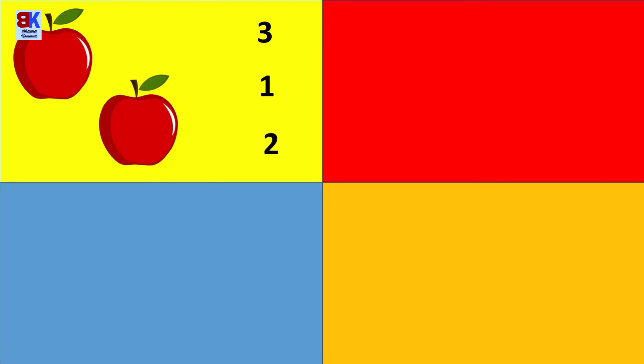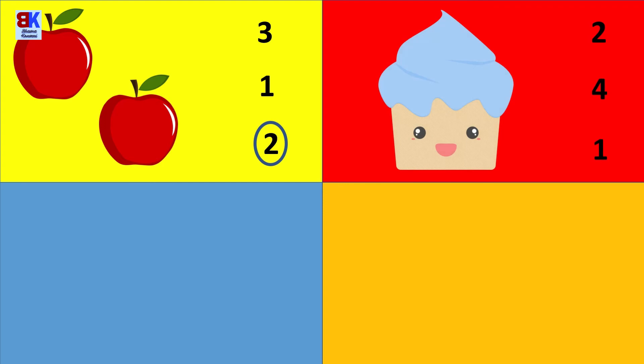Count the number of objects and circle the number. How many apples are there? One, two. Absolutely correct.